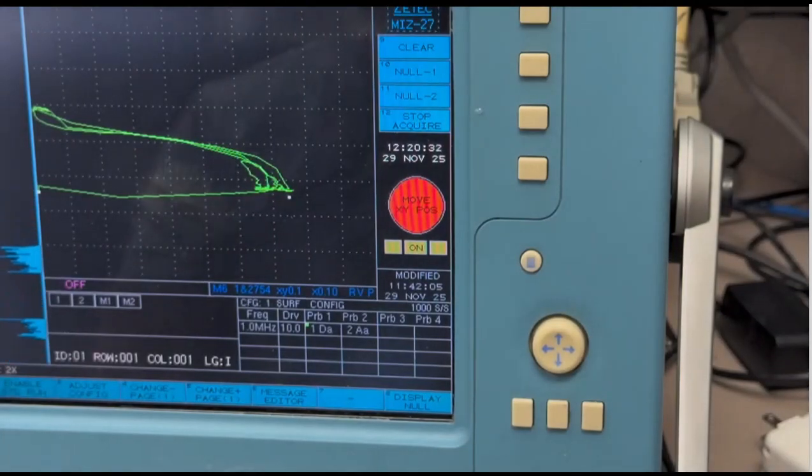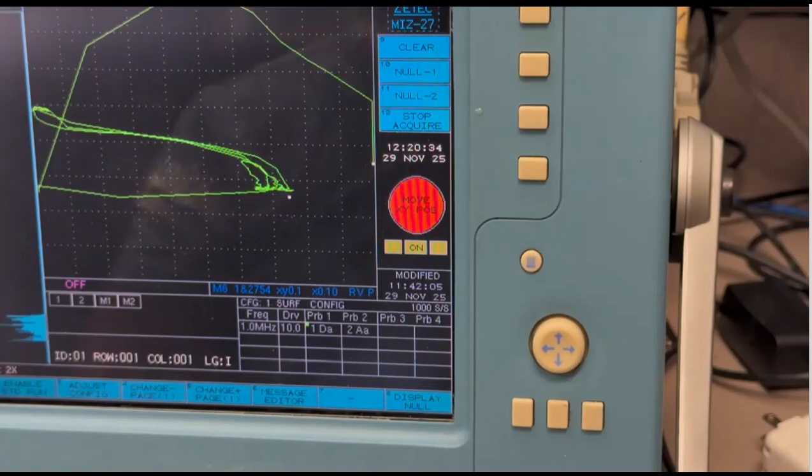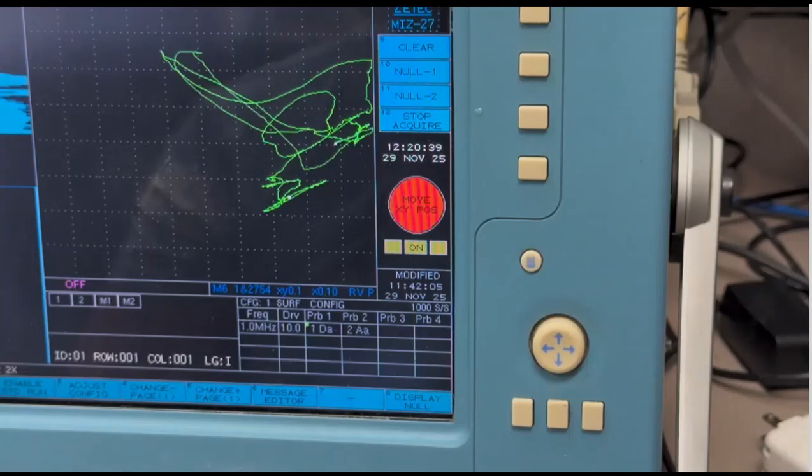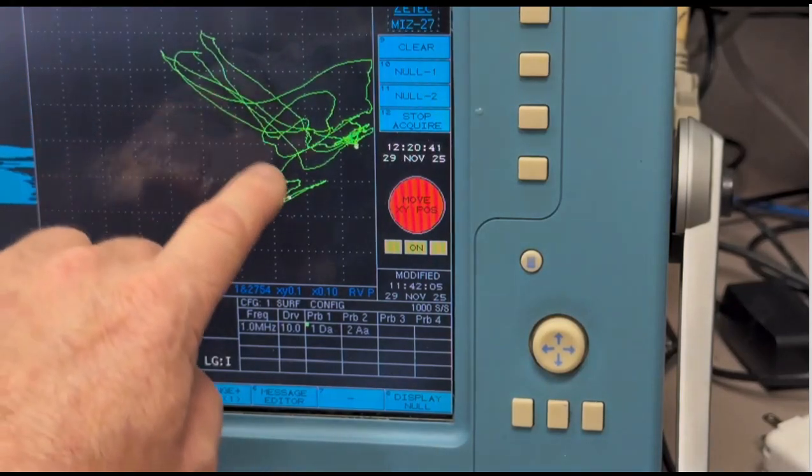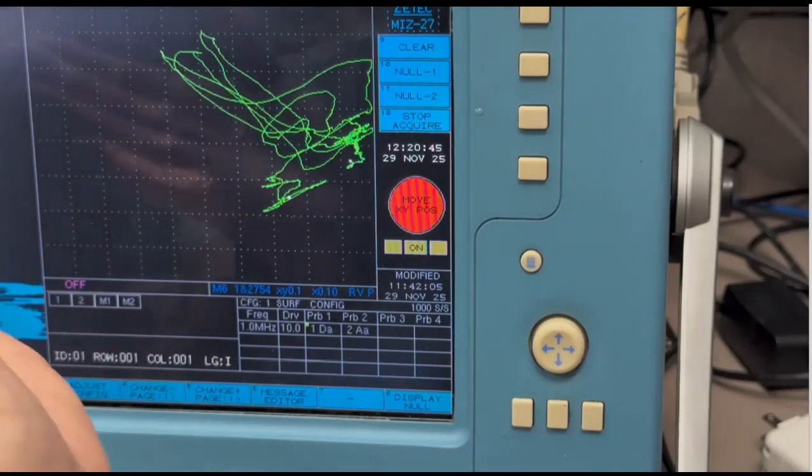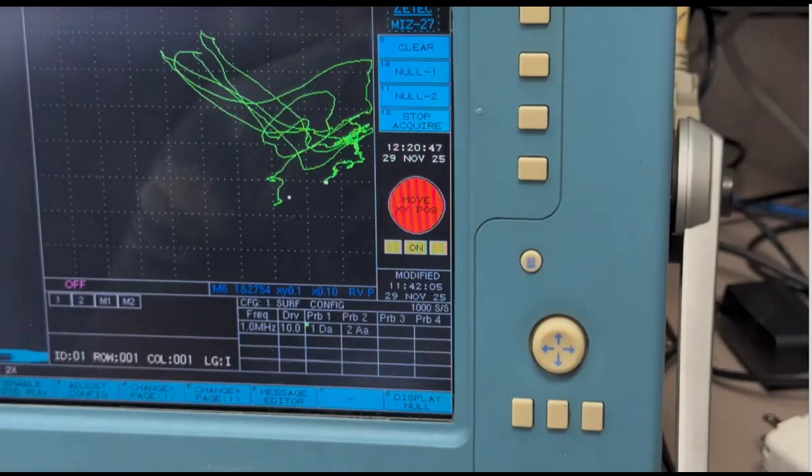So the next thing I'm going to do is take a sheet of Reynolds wrap and put it right on top of that EDM notch. I'm going to re-null and check out that signal. Not that beautiful, but now it's only about 40% of the screen height. But you can see that it tipped up clockwise because there's more phase lag.